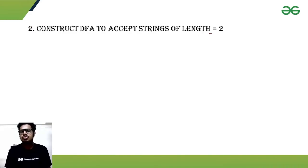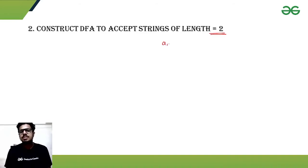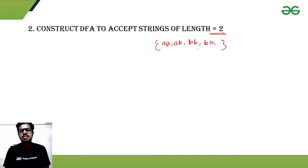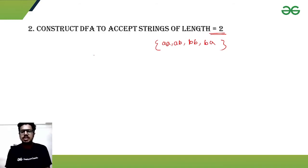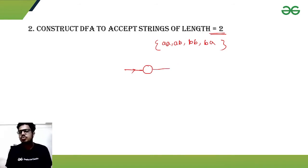Now let's look at the next part, where the string length should be equal to exactly some specific constant. In that case we need to be very specific. Only the strings aa, ab, ba, and bb will be accepted — any string with length less than or greater than 2 will be rejected. So the initial state won't be the final state, since we don't accept the null string.